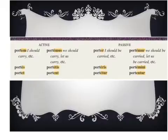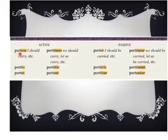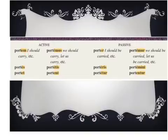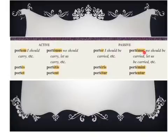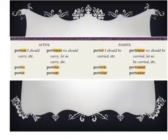Here is how the first conjugation verb 'porto' would conjugate in the subjunctive. Notice the first person singular doesn't have an 'o' for its personal indicator, but an 'm.' So, instead of 'porto,' it's 'portem.' And then it's 'es,' 'et,' 'emus,' 'etis,' and 'ent.' Notice how the endings, except for the first person singular, are the same. When we move over to the passive, the same pattern follows. All of the personal indicators will stay the same — the 'r,' 'ris,' 'tur,' 'mur,' 'mini,' and 'entur.' However, the vowel, instead of being an 'o' or an 'a,' is always 'e': 'er,' 'eris,' 'etur,' 'emur,' 'emini,' and 'entur.'